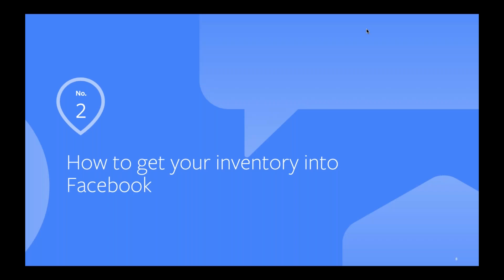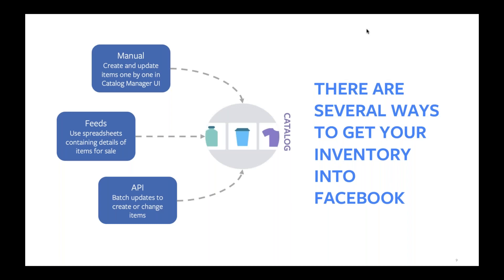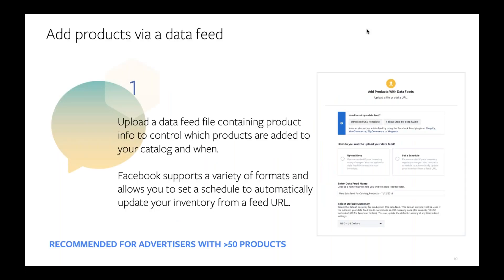How do you actually create a catalog? There are a couple of different ways to get your inventory into Facebook. The first is manually — you can add products one by one in our catalog manager UI. We don't recommend this for customers with more than 50 products, as it's very hard to scale. The options we tend to see the most adoption of are feeds and the API. With a data feed, we support a number of formats and allow you to set a schedule to automatically update your inventory from a feed URL.